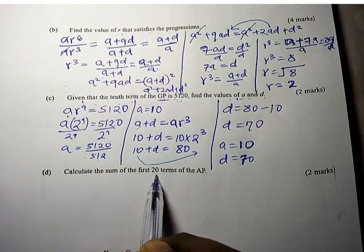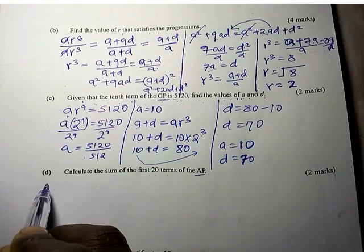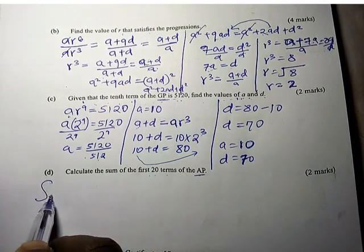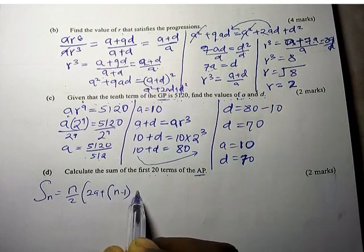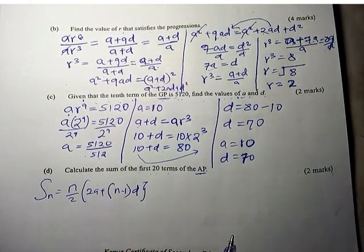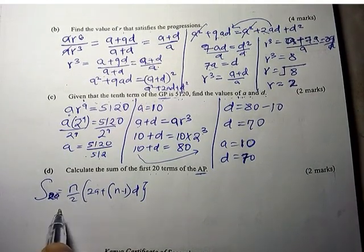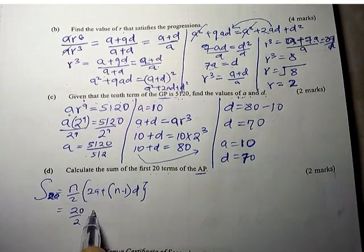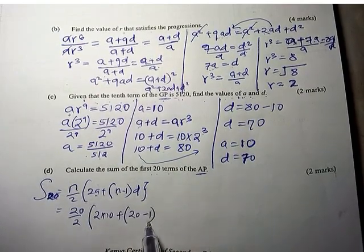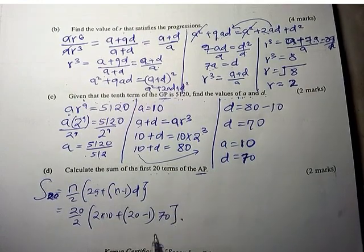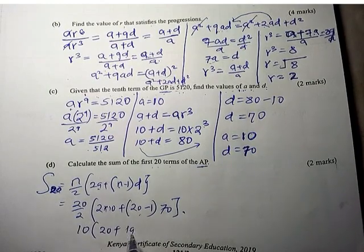Now calculate the sum of the first 20 terms of the AP. The sum formula is S_N equals N over 2 times 2A plus N minus 1 times D. With N equals 20, A equals 10, and D equals 70: S₂₀ equals 20 over 2 times 2 times 10 plus 19 times 70, which is 10 times 20 plus 1330.